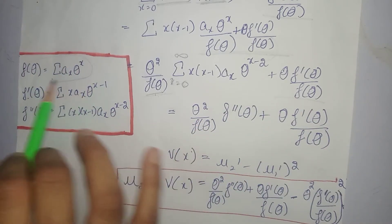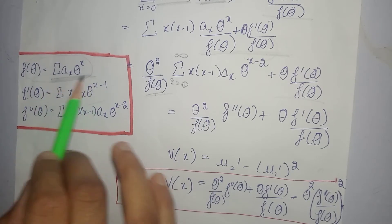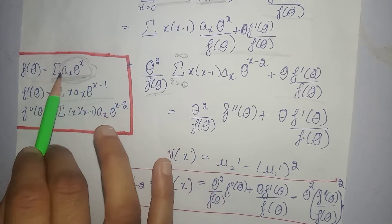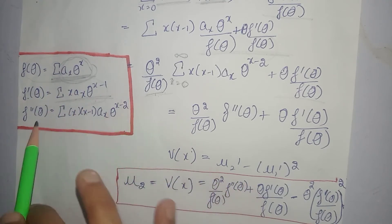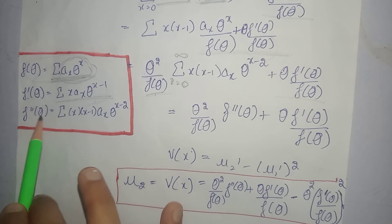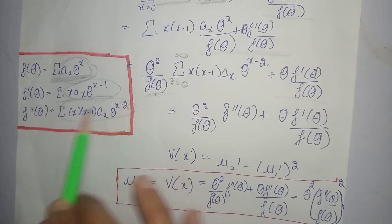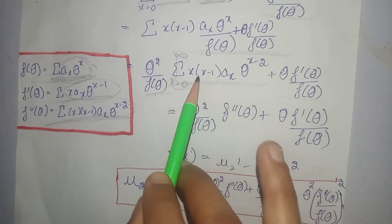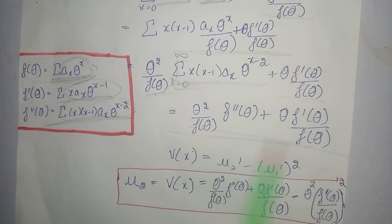Now have a look. F(theta) ki value hamare paas yeh hoti hai. F dash theta ki value yeh hoti hai — that is, first time agar hum isko differentiate karein, toh hamare paas yeh value aajayegi. Basically hum only anderwali term ko differentiate karte hain; summation par koi bhi fark nahin padega differentiation ka. That is second derivative of f(theta) function — with respect to theta differentiate karenge, isko ek baar aur differentiate karenge, hamare paas yeh aagaya. Now yeh iski equal hai. That means hum is puri term ki jagah par f double dash theta likh sakte hain. Hamare paas yeh aagaya, and yeh actually haara mu2 dash tha. Mu2 dash ki value hum ne yahan se find out kar li.